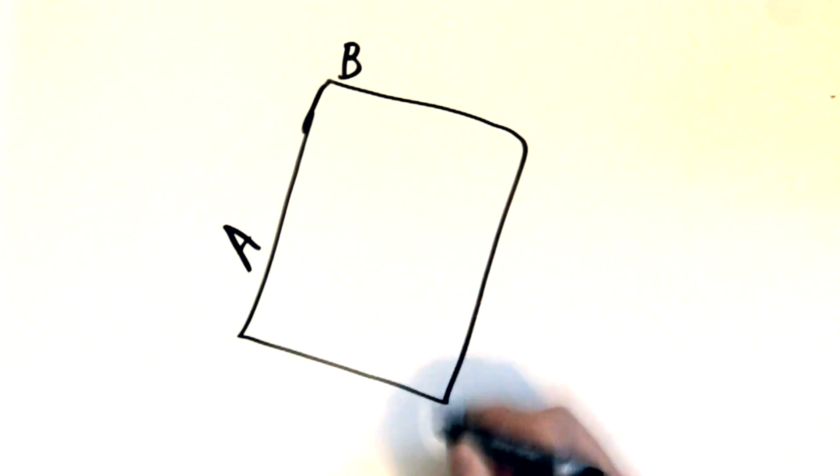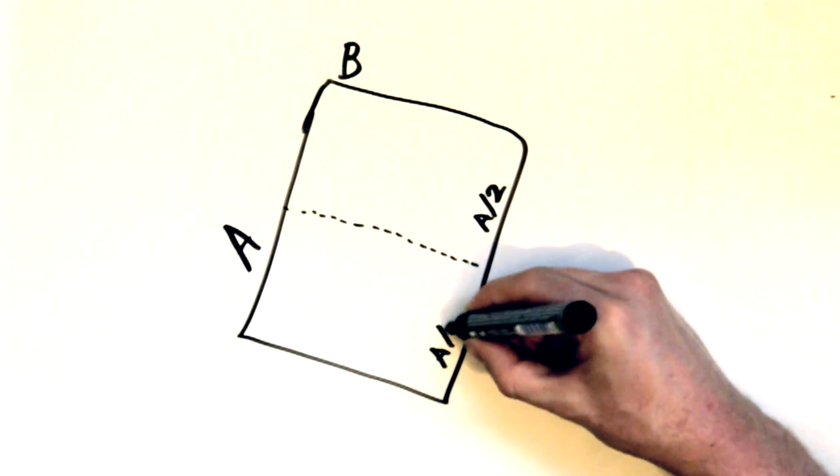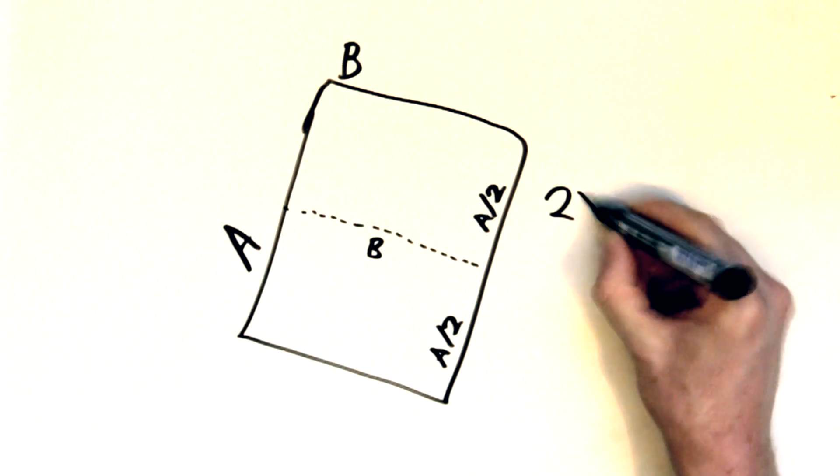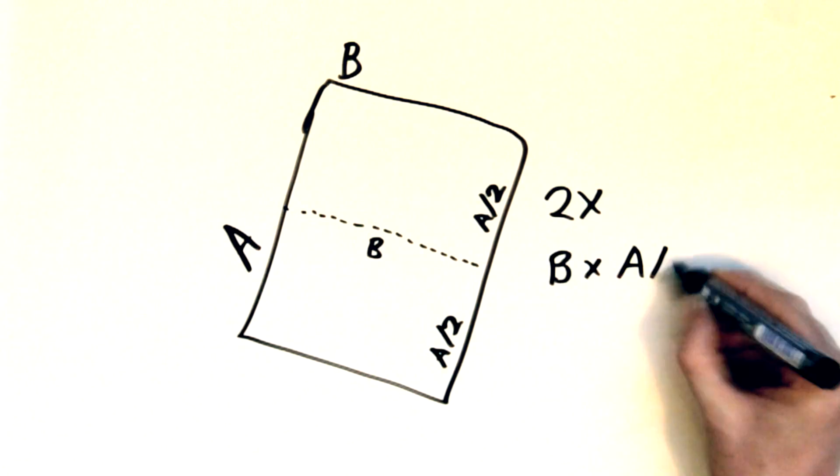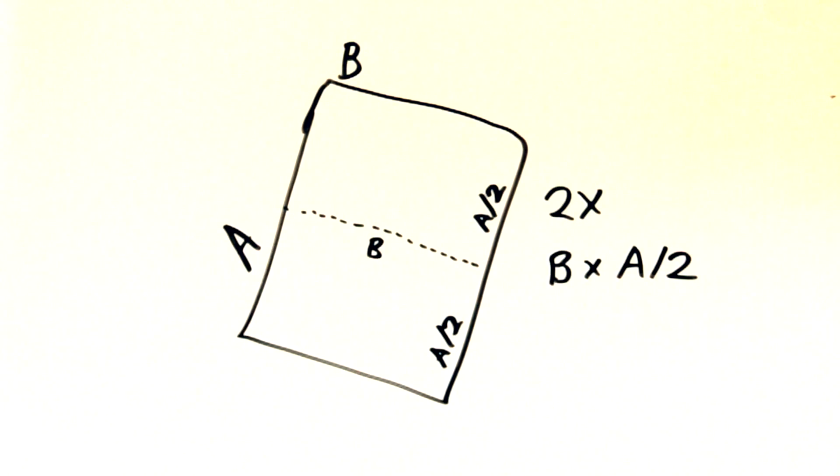So how does this work mathematically? Well given a paper with sides A and B, if we fold it we'll end up with two papers that has the size B by half an A. How do we calculate the new aspect ratio?